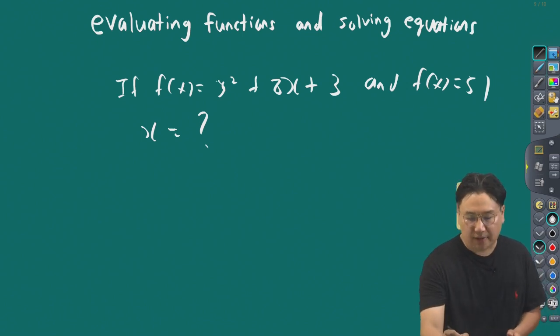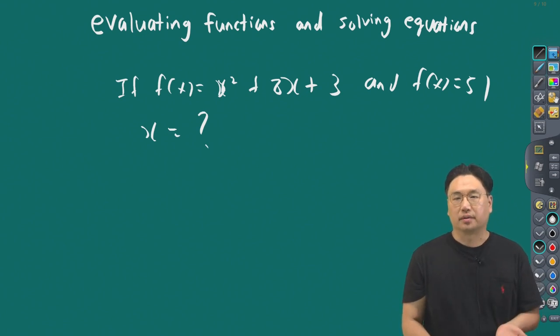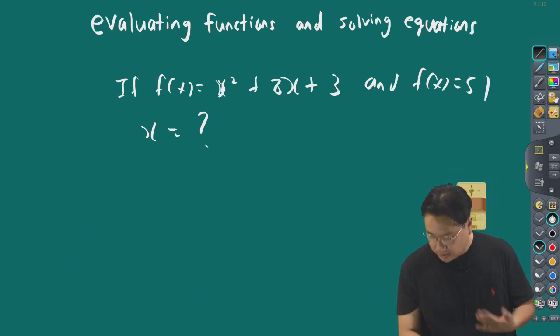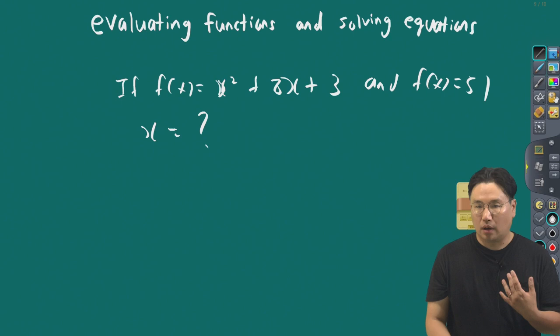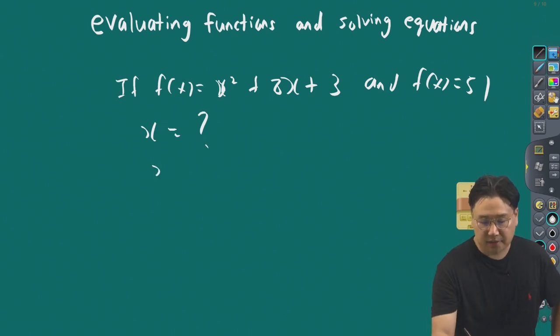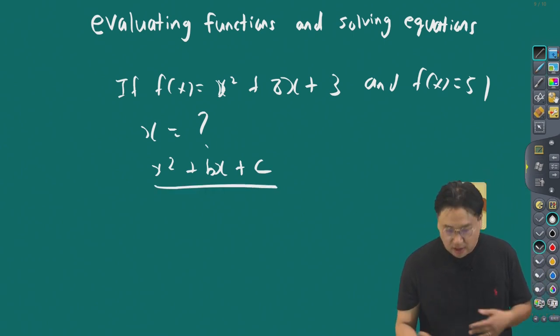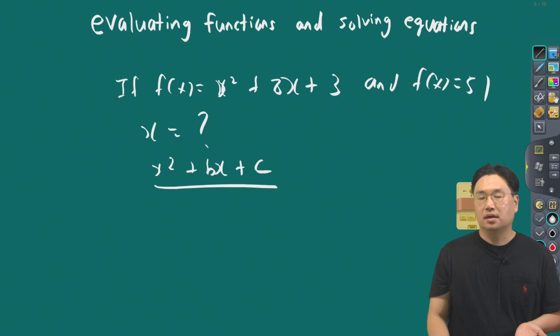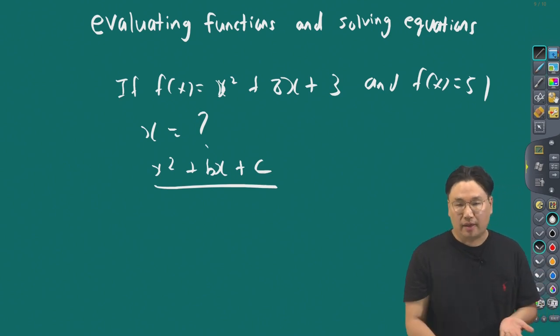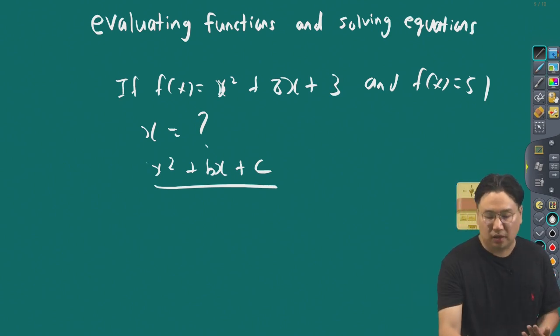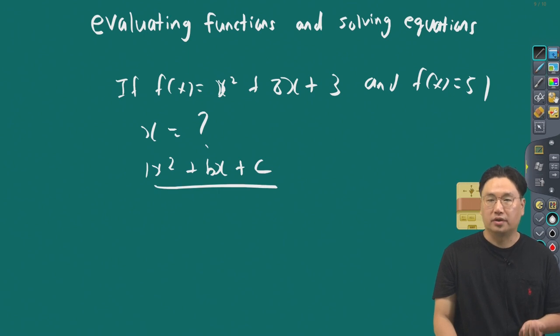Remember, this is a quadratic equation. The form of the quadratic equation is ax squared plus bx plus c. We have three terms here: the constant term is c, the middle coefficient is b, and the leading coefficient is a, which here is 1. This is what you need to remember.